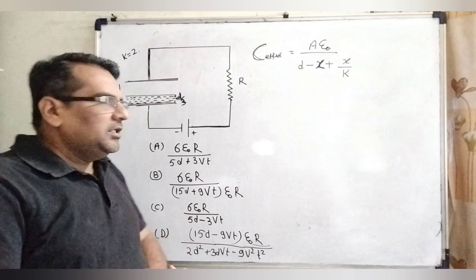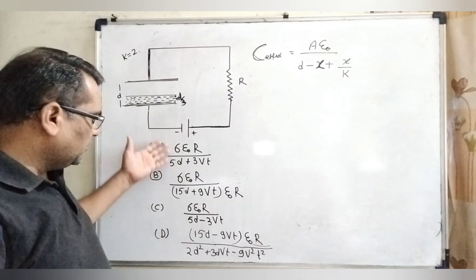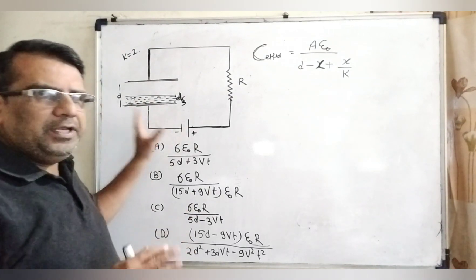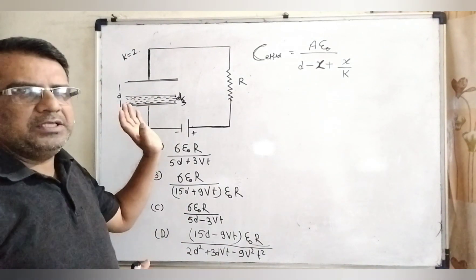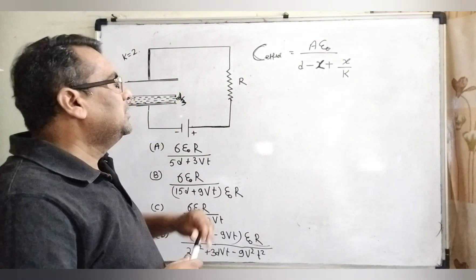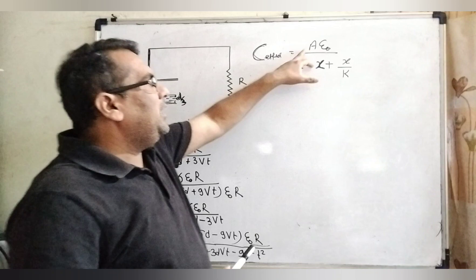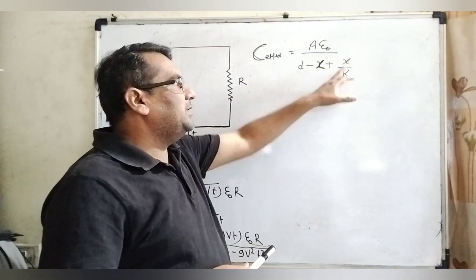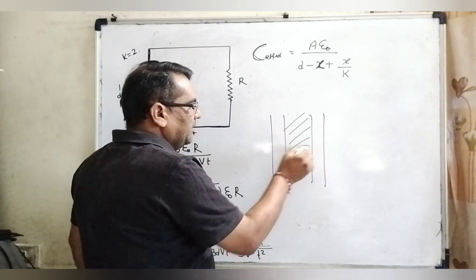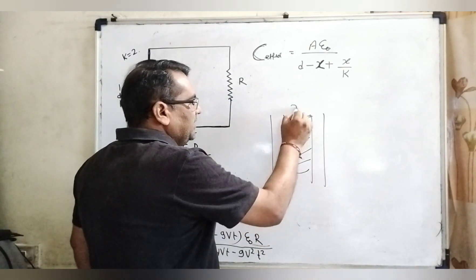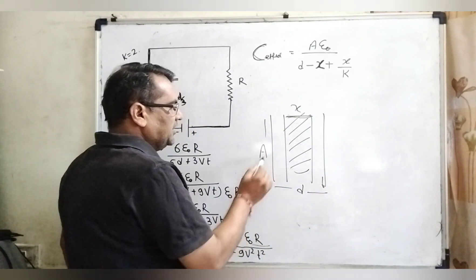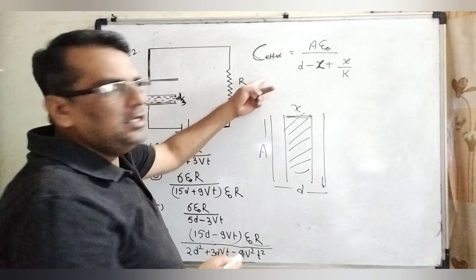In first glance, it looks like difficult because we are seeing these objectives, but it is very simple and mathematical based question. Here we have to use the formula using dielectric constant: C effective equals A epsilon naught over d minus x plus x by k. You are well known about that when we have using dielectric constant of the width is x and total width between the two plates is d and the area of cross section A, that time we use this formula.